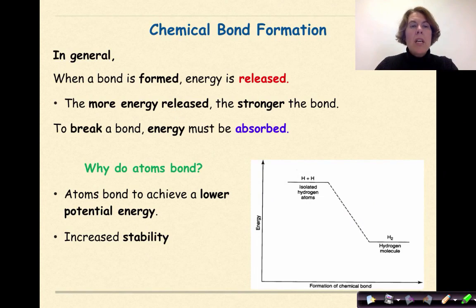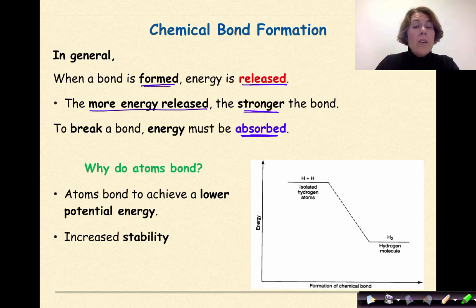Chemical bond formation. In general, when a bond is formed, energy is released. The more energy released, the stronger the bond. To break a bond, energy must be absorbed. Now the question is, why do atoms bond in the first place? Atoms bond to achieve a lower potential energy. In other words, increased stability.